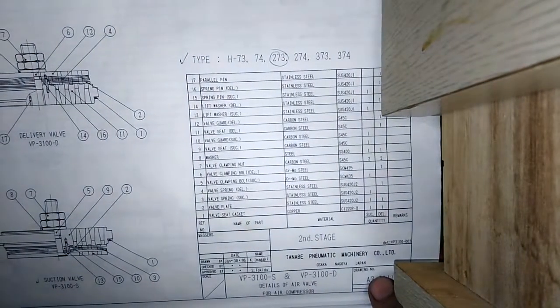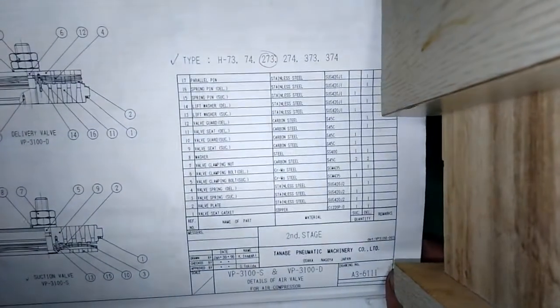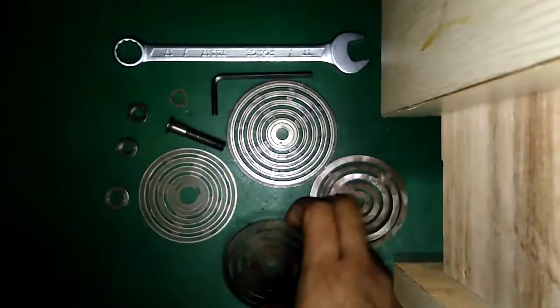Number nine, valve seat section. This is the valve seat section. Number ten, wall guard section. This is the wall guard.